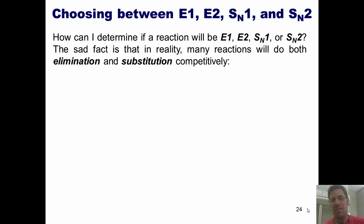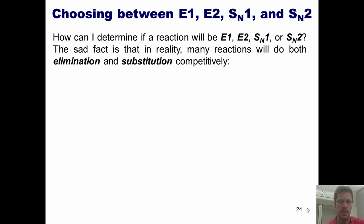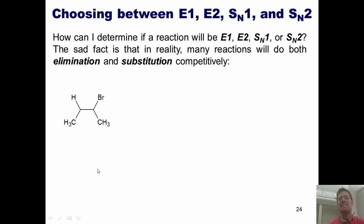The sad fact is that in reality, many reactions will do both elimination and substitution competitively. For example, if I've got a simple material like this, with a leaving group stuck to a secondary carbon, it could potentially do E1, E2, SN1, or SN2, depending on what I react it with.